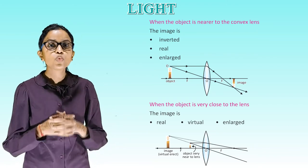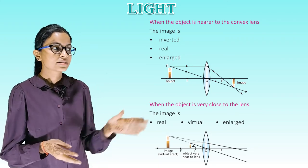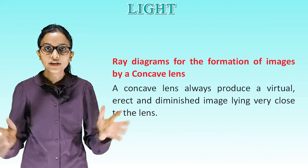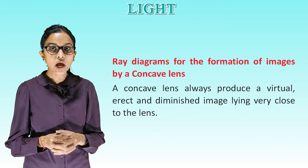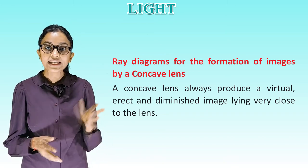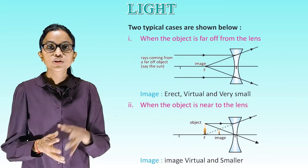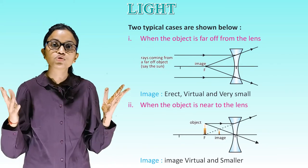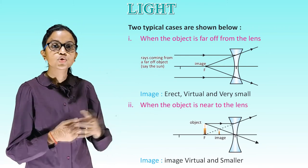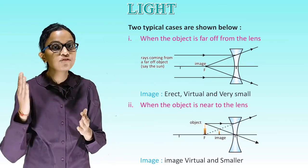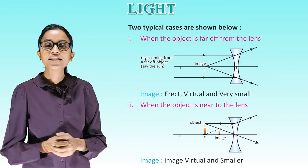When the object is very close to the lens, the image is virtual and enlarged. Ray diagrams for the formation of images by a concave lens: a concave lens always produces a virtual, erect and diminished image lying very close to the lens. When the object is far off from the lens, the image is erect, virtual and very small. When the object is near to the lens, the image is virtual and smaller.